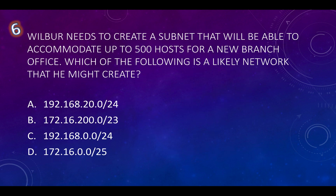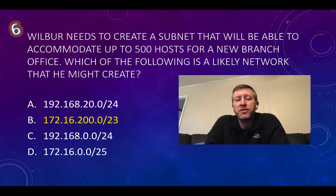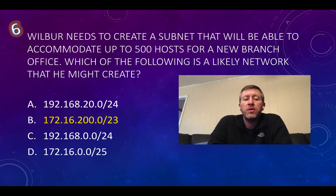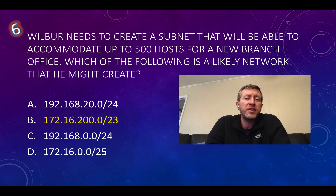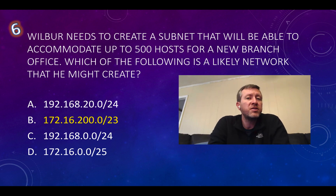Question number six: Wilbur needs to create a subnet that will accommodate up to 500 hosts for a new branch office. Which of the following is a likely network he might create? A /24 gives 256 total IP addresses — subtract one for network ID and one for broadcast, leaving 254 usable hosts. So we can eliminate a /24. A /25 gives even fewer hosts per subnet. A /23 is our only option here, giving a total of 512 IP addresses, meaning 510 usable hosts per subnet. So this is going to be B.